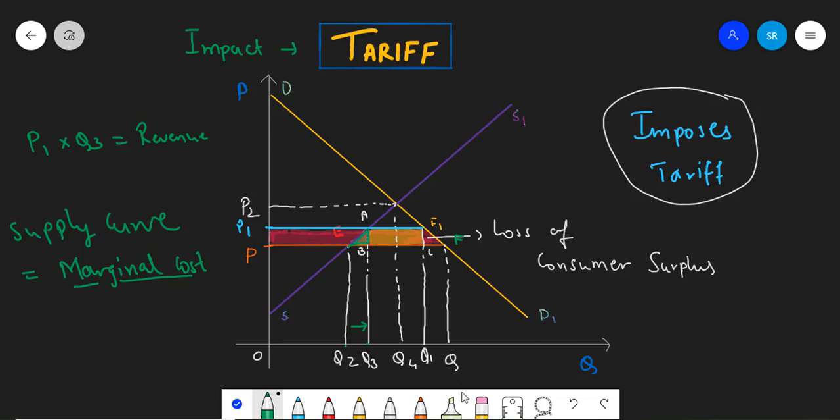Hence, the total benefit to the producers would be this area P, P1, A, E.